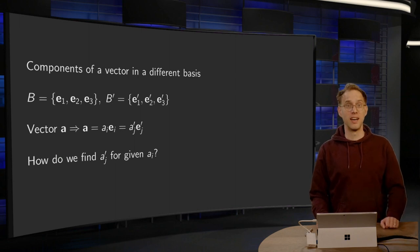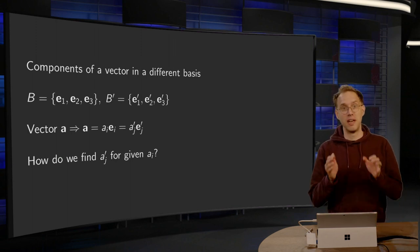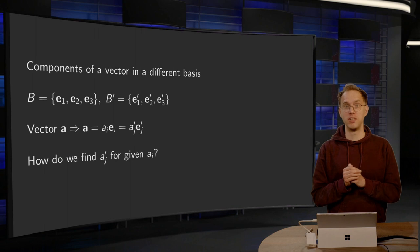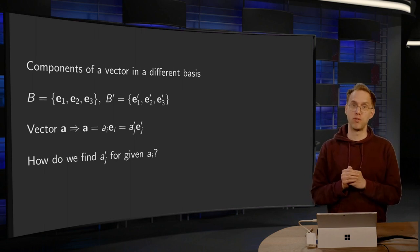Objects like vectors are independent of the particular basis we choose. The components of a vector, when expressed in a certain basis, some numbers, do depend on this choice, of course.